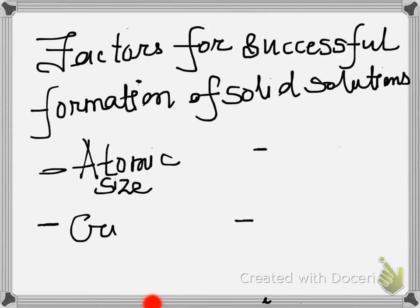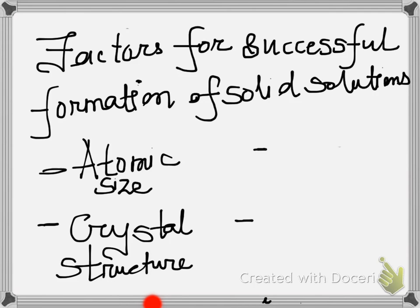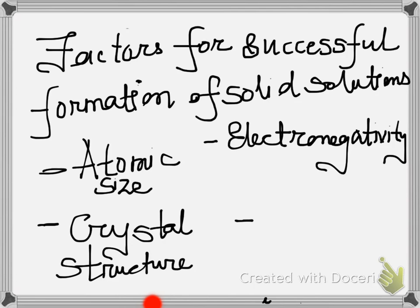The next point is crystal structure. Whether the material or the solid has an FCC or a BCC or any type of crystal structure, that also plays a very important role for how easily the solid solution forms. The next point is electronegativity. The less electronegativity difference, it is much better for the formation of a solid solution. If there is a very high difference, then it does not allow for formation of solid solutions.